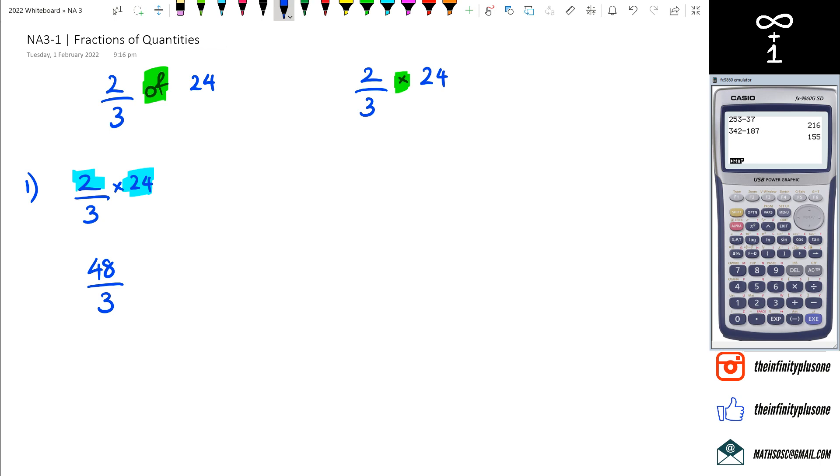You can use long division for this, split them up if you want to, or if you have a calculator close by you could just do it on the calculator. So 48 divided by 3 equals 16.